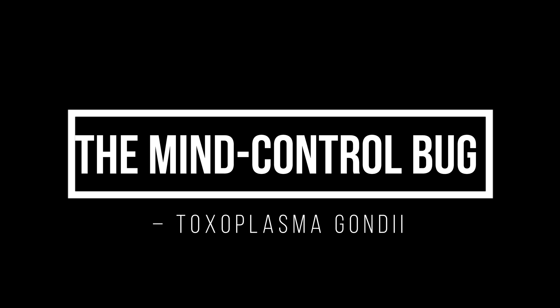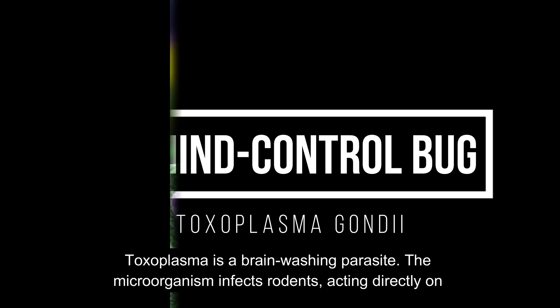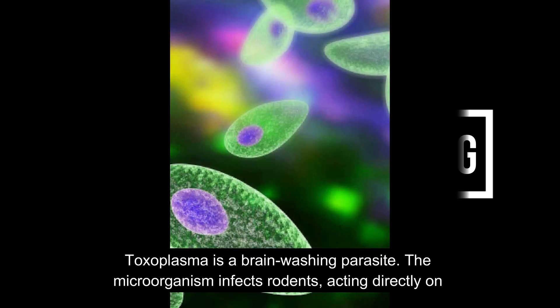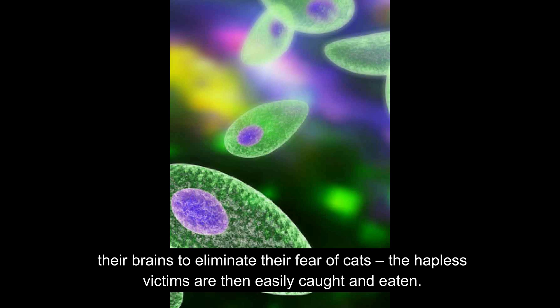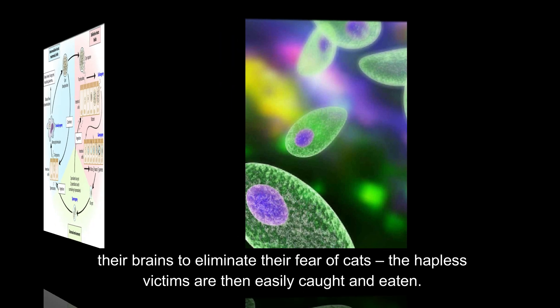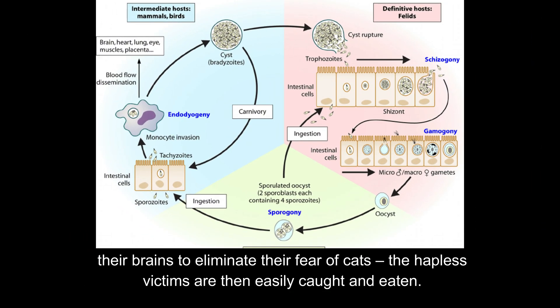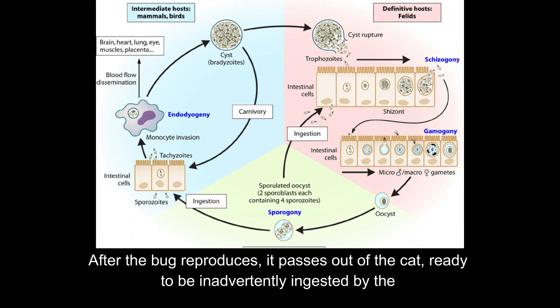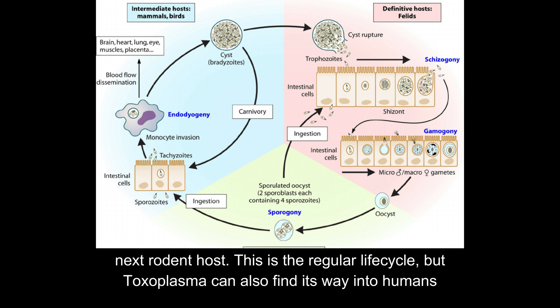The Mind Control Bug. Toxoplasma is a brainwashing parasite. The microorganism infects rodents, acting directly on their brains to eliminate their fear of cats. The helpless victims are then easily caught and eaten. After the bug reproduces, it passes out of the cat, ready to be inadvertently ingested by the next rodent host. This is the regular life cycle.